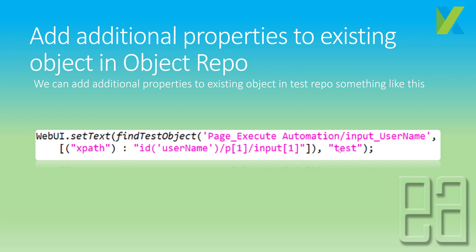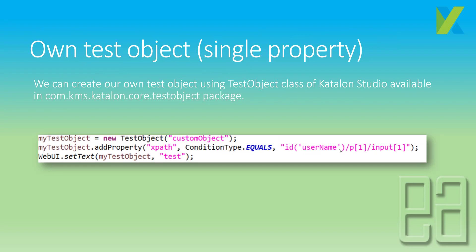Basically, the object must exist in the object repository of Katalon Studio. The next approach is creating your own object with a single property. Here I'm creating a test object using the com.kms.katalon.core.testobject package, which has a TestObject class. I create an instance, give it a name like 'custom object', then add a property using addProperty, specifying the property name, a condition type (like EQUALS or CONTAINS), and the value.